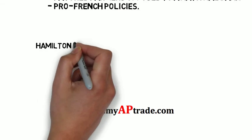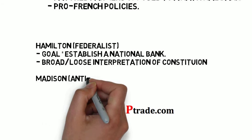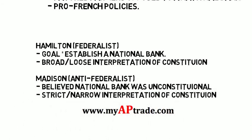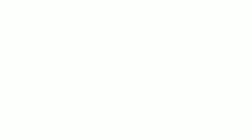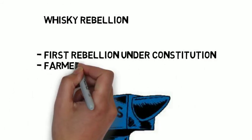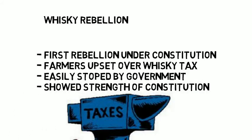During Washington's presidency, Hamilton was Secretary of Treasury and his biggest goal was to establish a national bank. Anti-Federalists like Madison felt it wasn't a constitutional right, since Madison had a strict or narrow interpretation — he wanted to follow the constitution word for word — while Hamilton had a broad or loose interpretation. The Whiskey Rebellion was the first rebellion the new government had to face, with farmers protesting taxes on whiskey. Unlike Shays' Rebellion under the Articles of Confederation, the Whiskey Rebellion was easily stopped since there was now a national army.